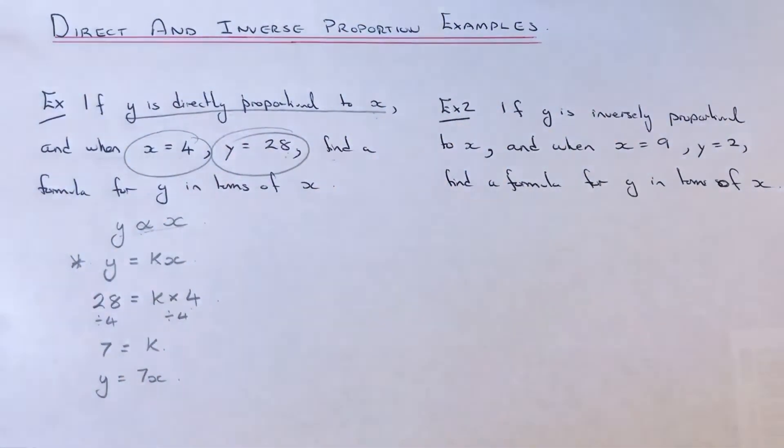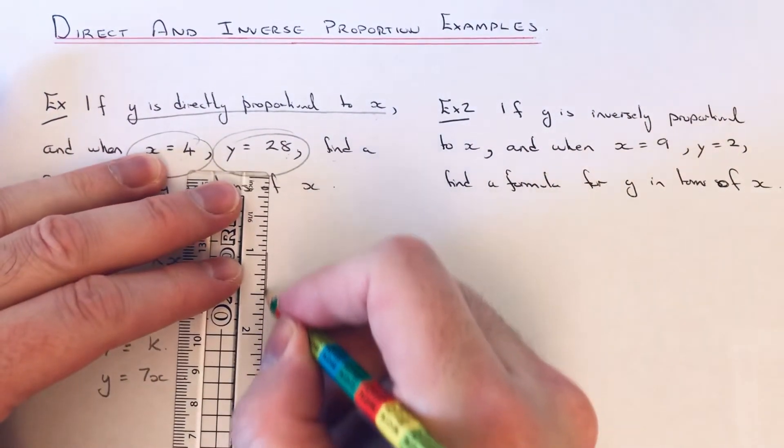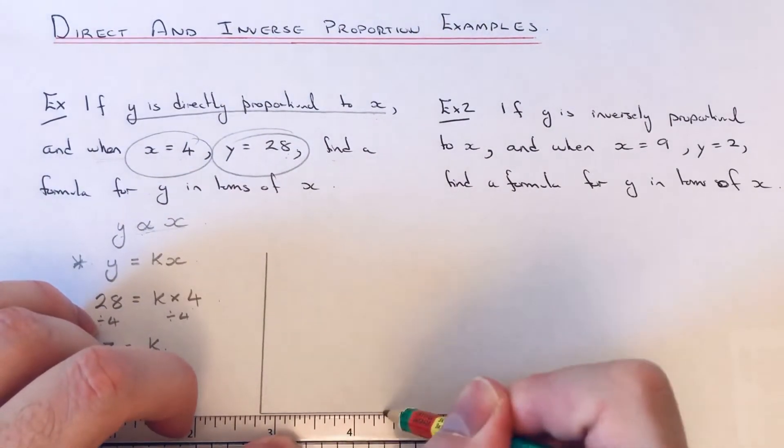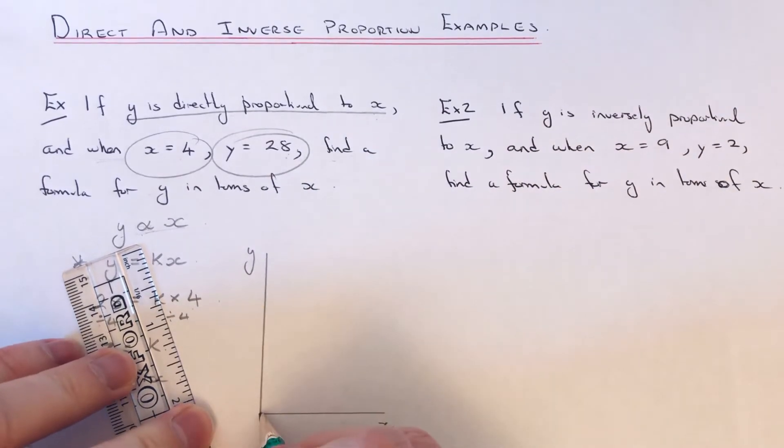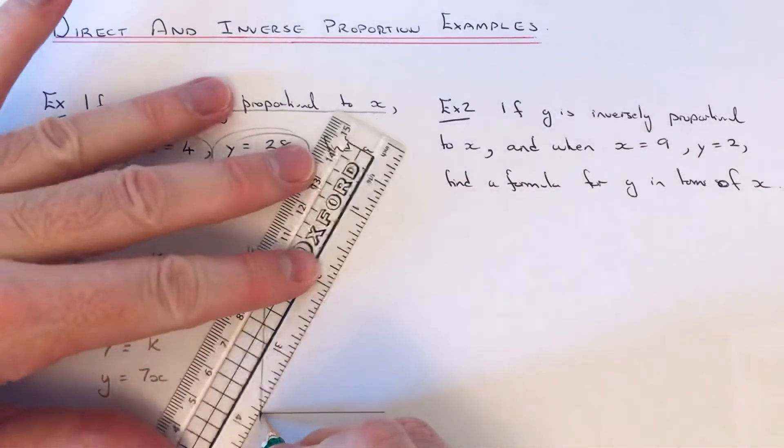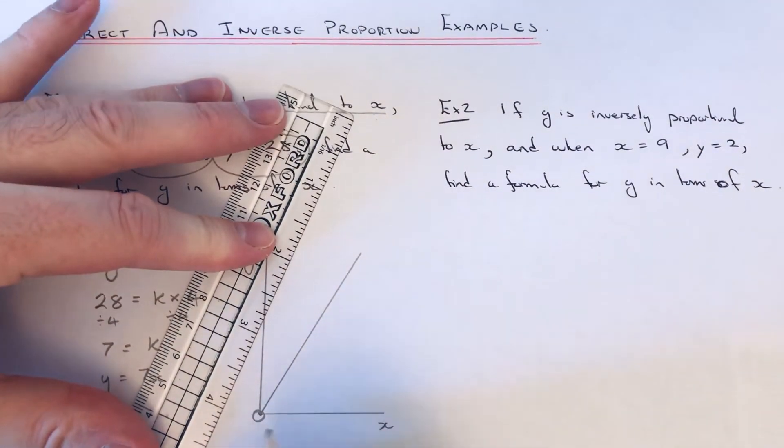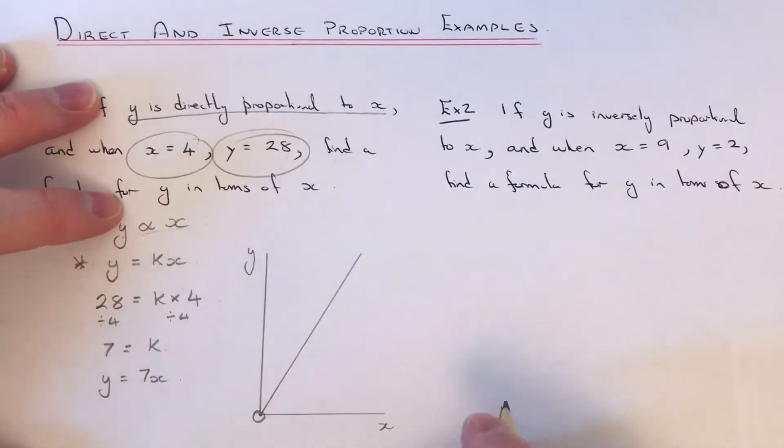Sometimes you might need to draw out the graph of that. So let me quickly sketch it out. If y is directly proportional to x, it would basically be a straight line going upwards from the origin. So as x increases, the y coordinate increases too.